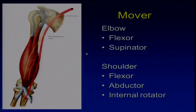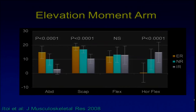The biceps has function to both the elbow and the shoulder. To the elbow it is known as the flexor and supinator. To the shoulder it is known as the flexor, abductor, and internal rotator. Using cadavers, we measured the moment arm of the long head of the biceps to the shoulder joint. It is an abductor — an elevator of the arm. During abduction or scaption, the elevator function is greatest with the arm in external rotation and least with the arm in internal rotation. During flexion, biceps function is not affected by rotation of the arm. During horizontal flexion, the function is greatest with the arm in internal rotation.